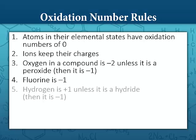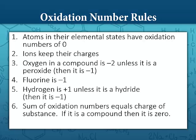So these are the basic rules. Atoms in their elemental states have oxidation numbers of zero. Ions keep their charges. Oxygen in a compound is negative two, unless it is a peroxide, in which case it will be negative one. Fluorine is negative one. Hydrogen is plus one, unless it is a hydride, in which case it will be negative one. And the sum of oxidation numbers equals the charge of the substance, so if it's a neutral compound, the sum of the oxidation numbers will equal zero.